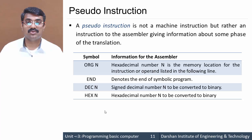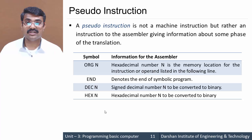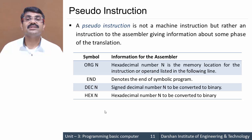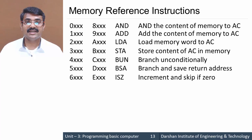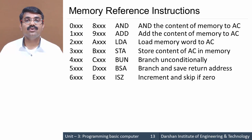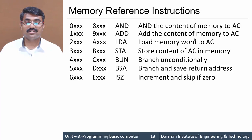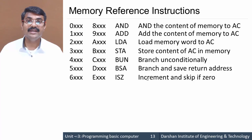Coming to actual machine instructions: as studied in our previous chapter, machine instructions are of three types. Starting with memory reference instructions, which are AND, ADD, LDA, STA, BUN, BSA, and ISZ. You should be aware of the corresponding hex code for these instructions and what each performs — remember all memory reference instructions to write assembly language programs.